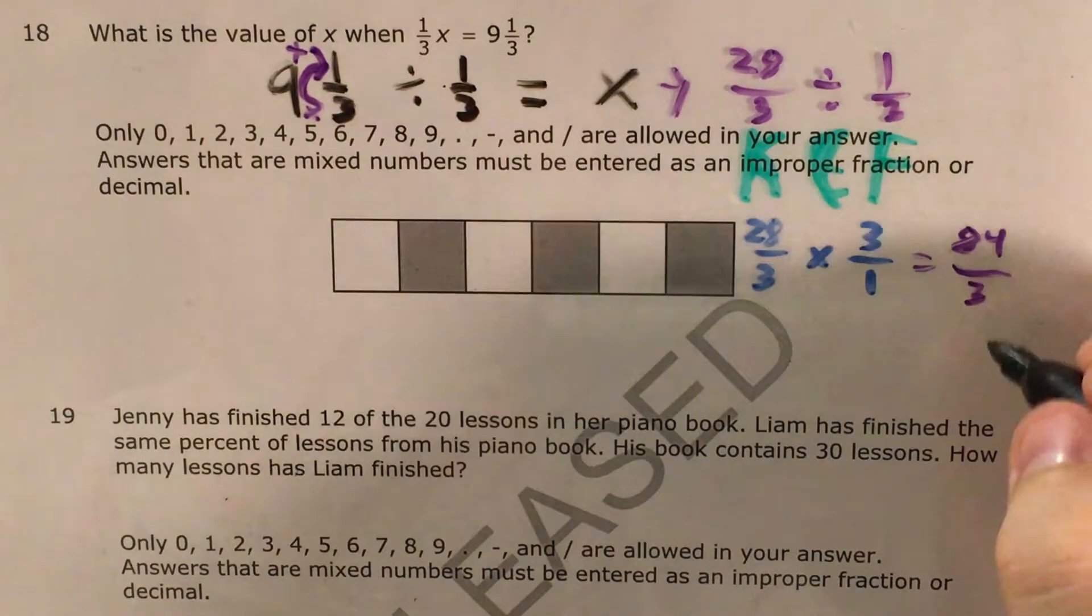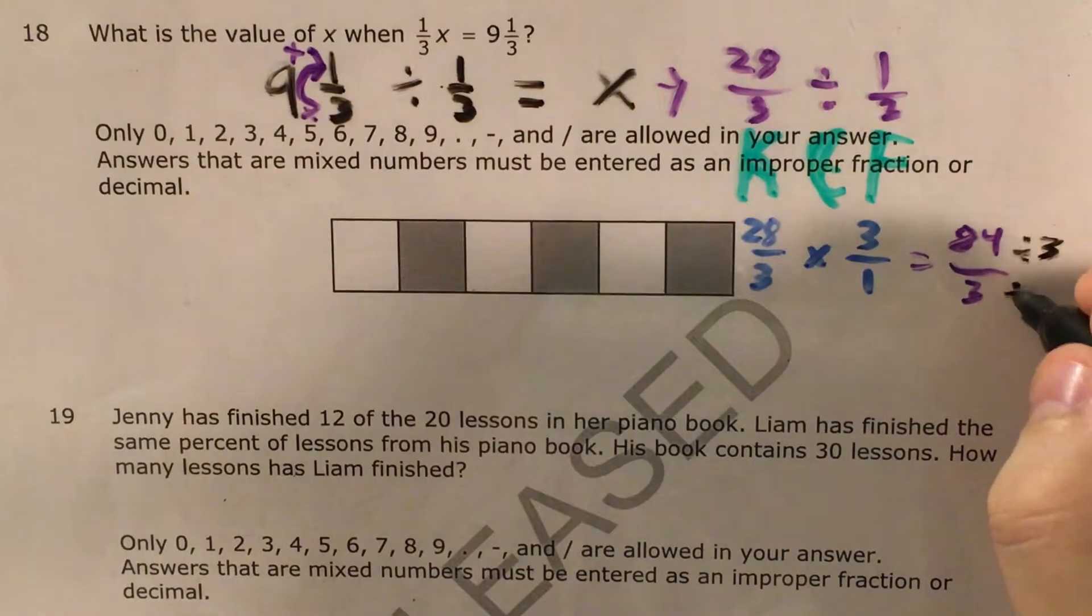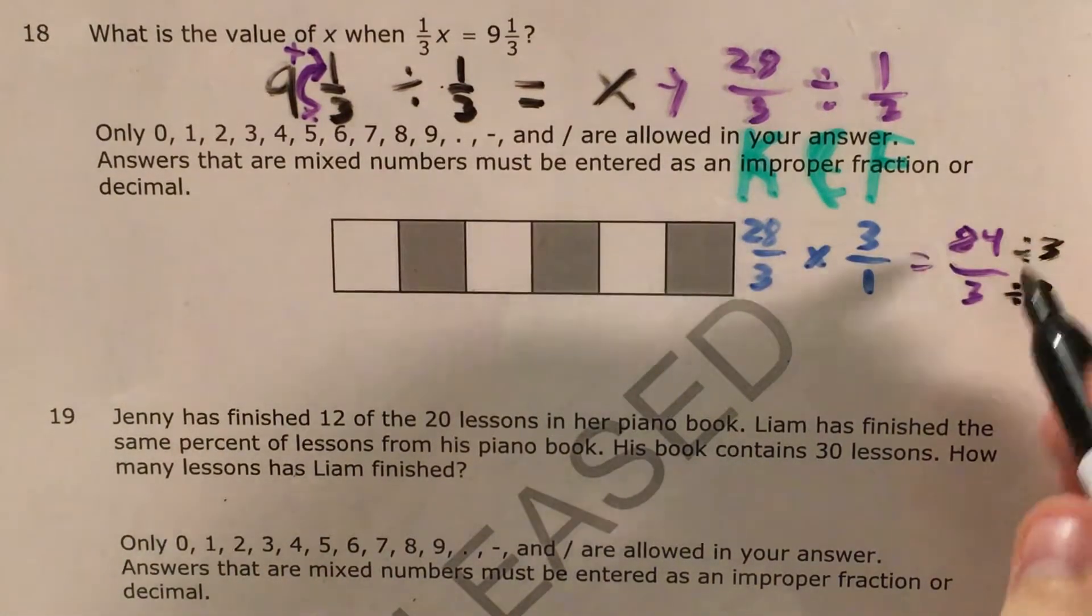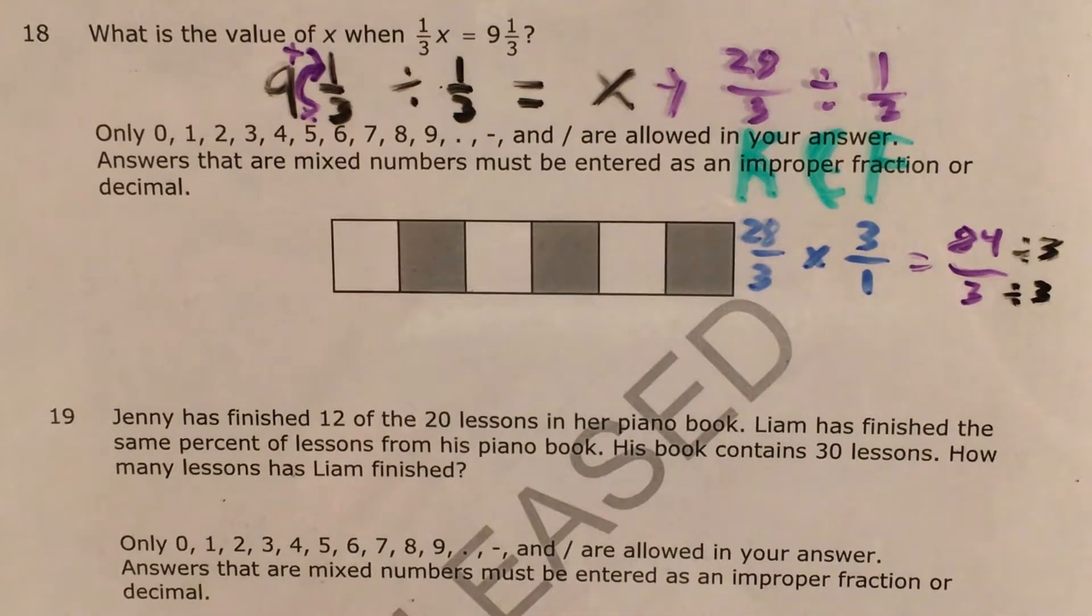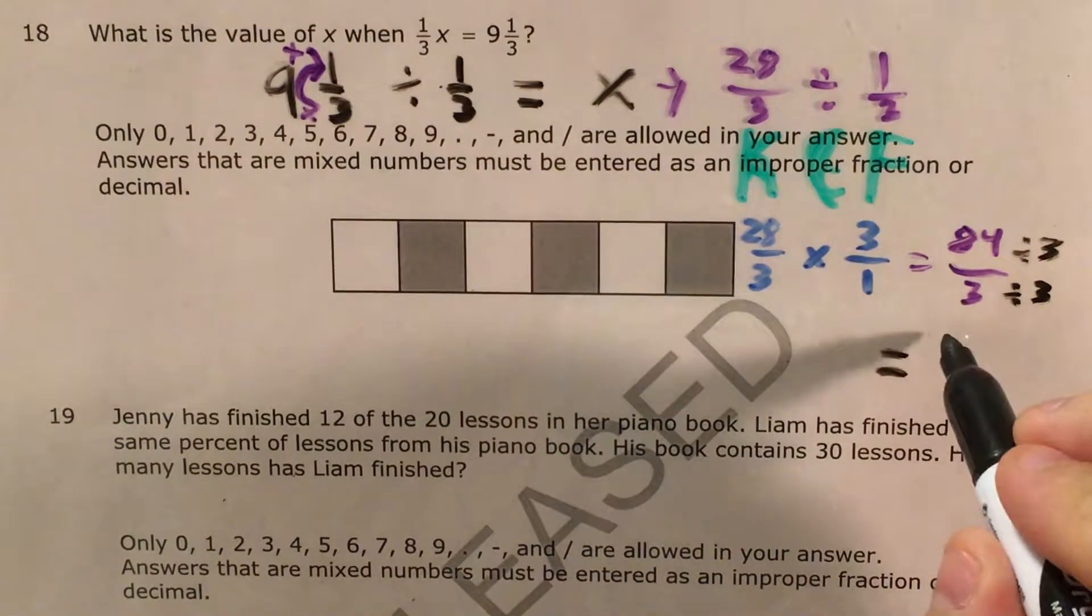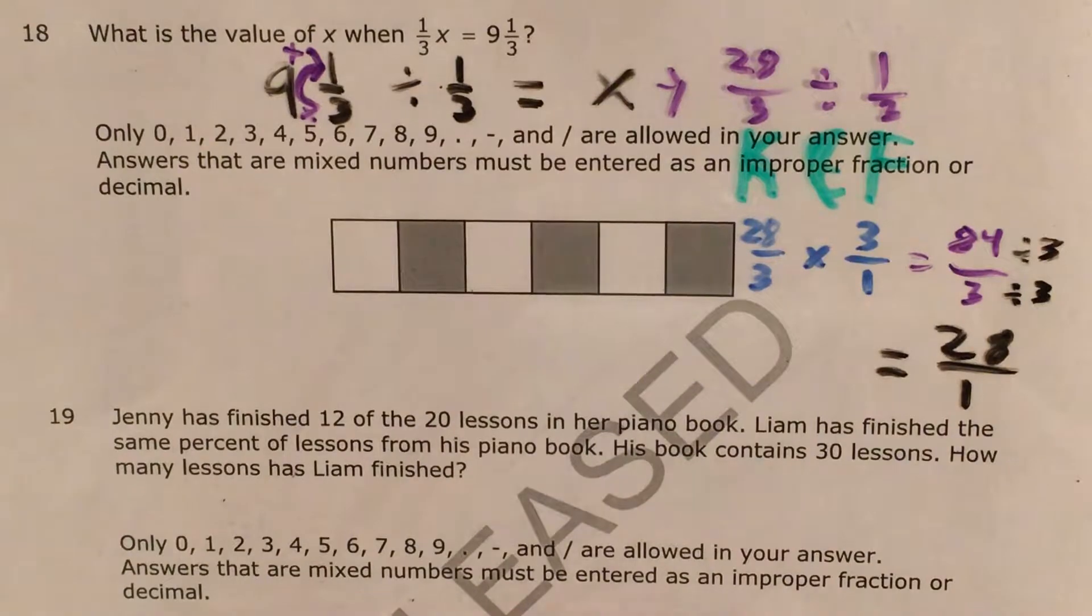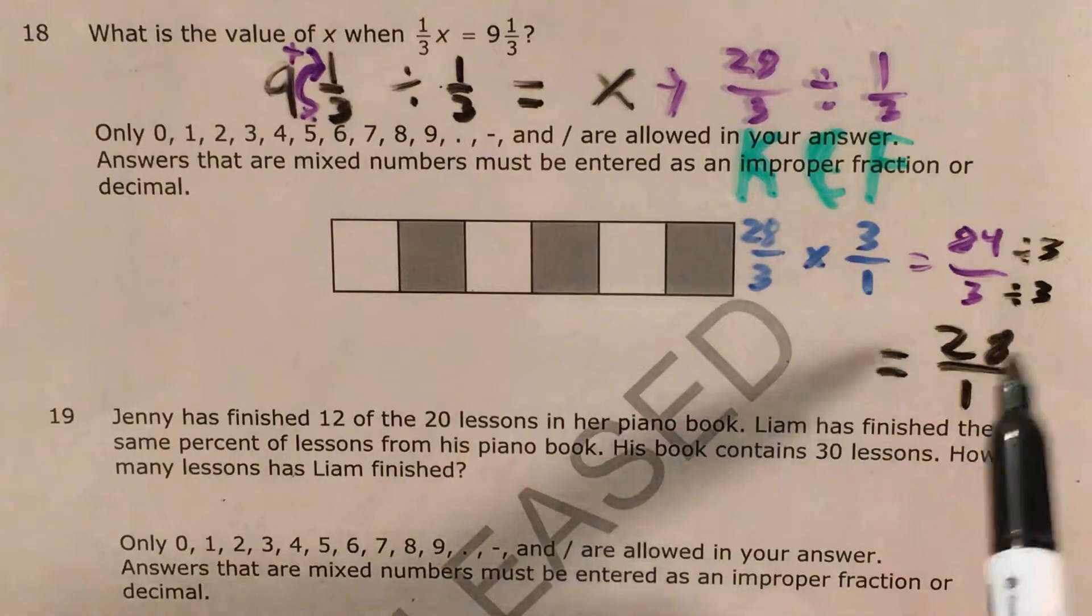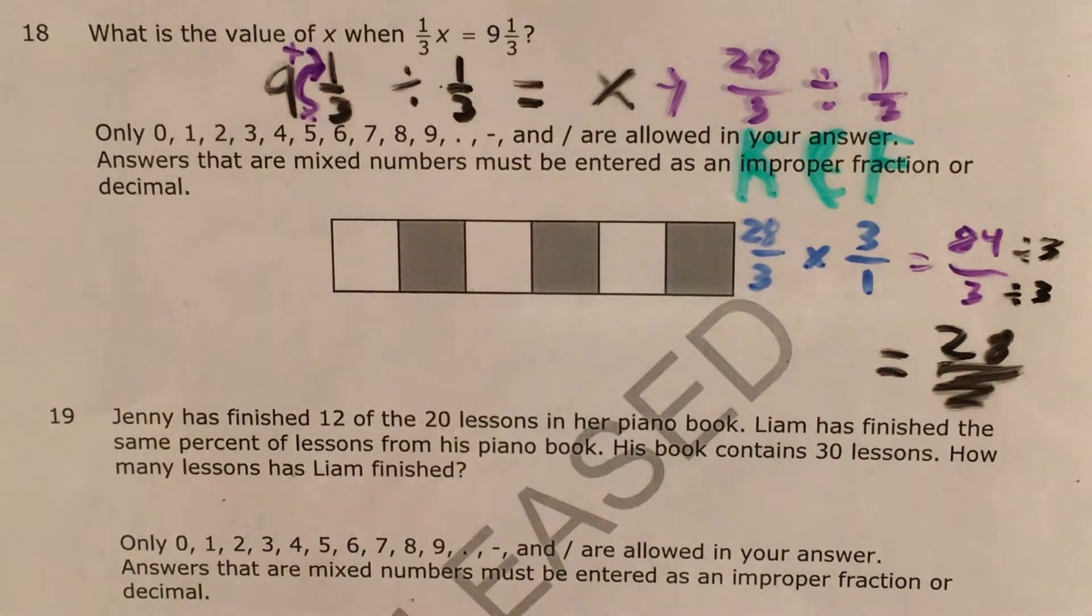And now if I look for a number that can go into both 84 and 3 so I can simplify this, that's going to be 3. So I divide by 3 in both my numerator and my denominator so that I can keep the fraction's value the same, but make the numbers as small as possible. 84 divided by 3 is 28. 3 divided by 3 is 1. So I end up with 28 over 1, also known as 28.